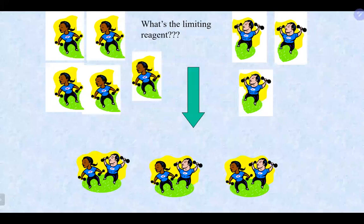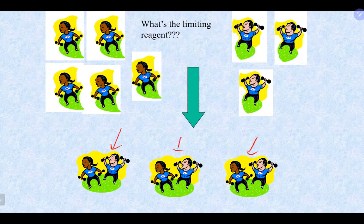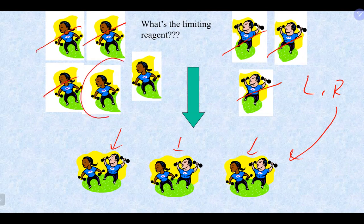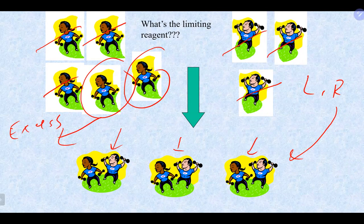For example, if we're making workout buddies, we need one guy and one girl. In this case we'd be limited by the guys — this would be the limiting reagent, determining how much product we can make. If we made three partners, we'd have two of the excess reagent left over, so we could easily determine how much is left over.